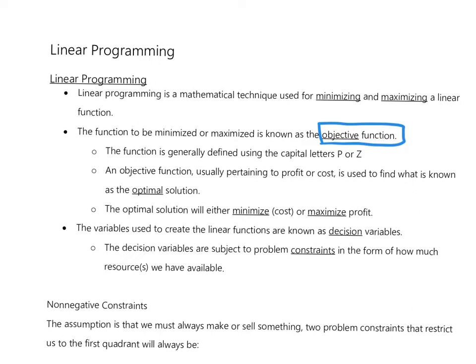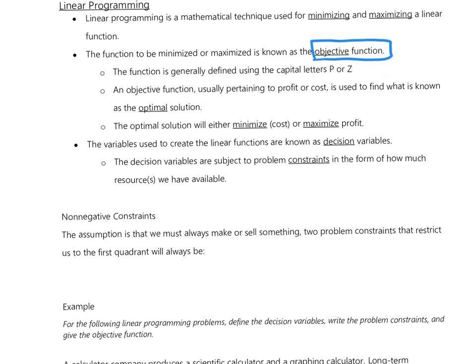The variables we create are called decision variables, and they are based on the constraints in the problem. There's also one set of constraints that are always given to us — our non-negative constraints. These are always defined as both variables being greater than or equal to zero, which keeps us in the first quadrant. So we always have X ≥ 0 and Y ≥ 0, and we must have those for every problem.